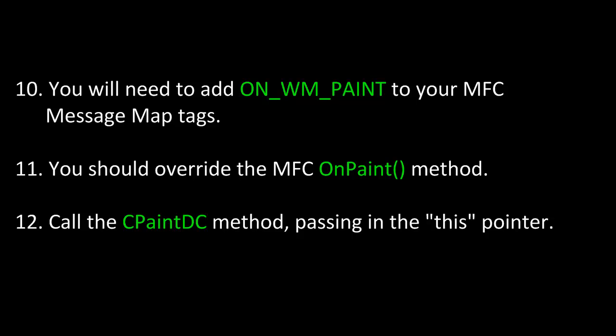We might think we're finished at this point, but there's still a few more things we need to do. Remember, this method is a little bit more involved than the first, but if you want to display JPEGs and GIFs and not only bitmaps, these steps are necessary. We need to add the ON_WM_PAINT message ID to the MFC message map tags for our CDialog. After that, we need to override the MFC onPaint method. Inside our overridden onPaint method, we call the CPaintDC method and pass in the this pointer — this will cause our JPEGs or GIFs to display in the picture control when the screen is repainted.